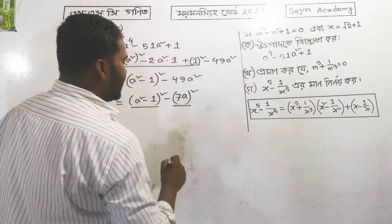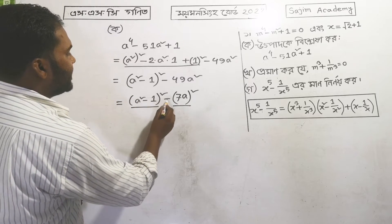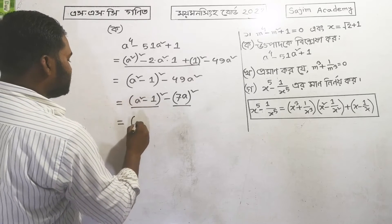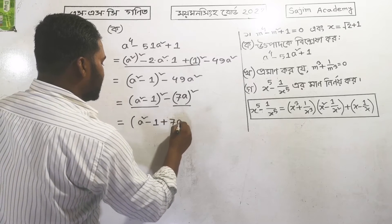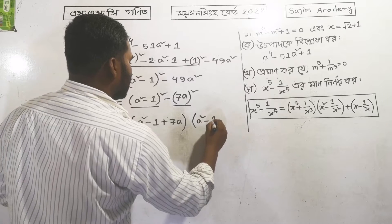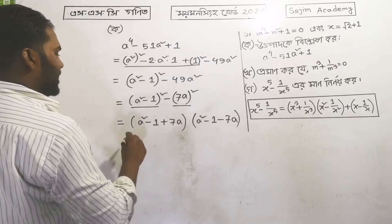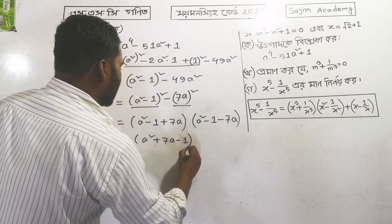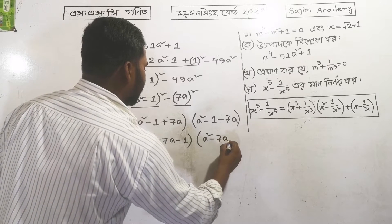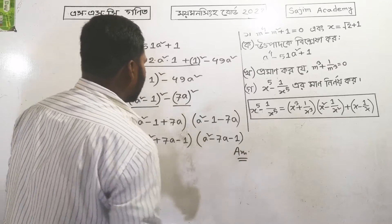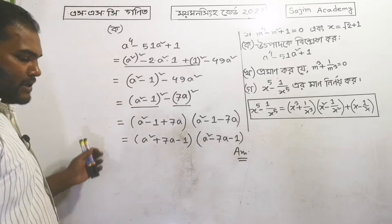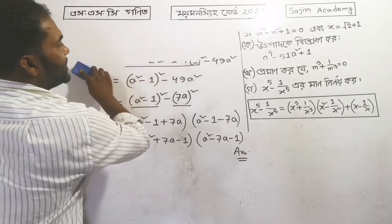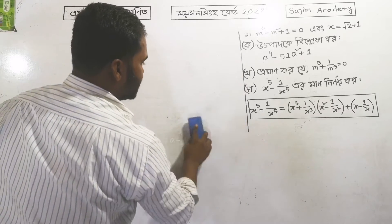Be chana korbo, ebong 7A-er bhitore tuke mara bi bi bi chana kor. Ekhon judi amra ek ekektu shaji e likhi dekho, thole ekhane amra likhte parbo. Ekane likhte parbo — eti holo konang.